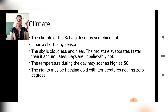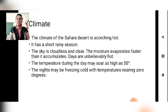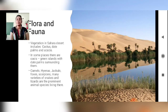The climate of the Sahara desert is scorching hot. It has a short rainy season, the sky is cloudless and clear, and moisture evaporates faster than it accumulates. Days are unbelievably hot — the temperature during the day may soar as high as 50 degrees Celsius — and nights may be freezing cold with the temperature nearing zero degrees. It's an extreme condition with very high day temperatures and freezing cold nights.